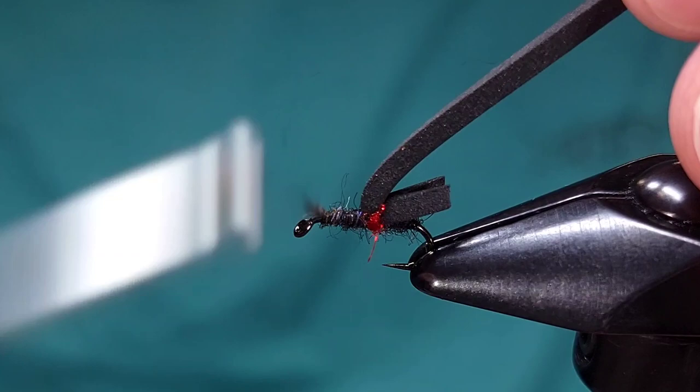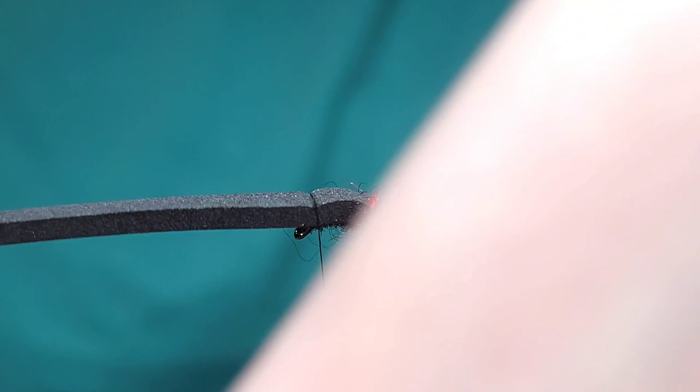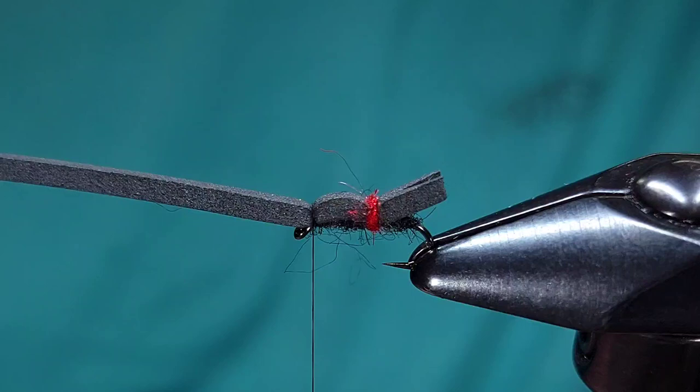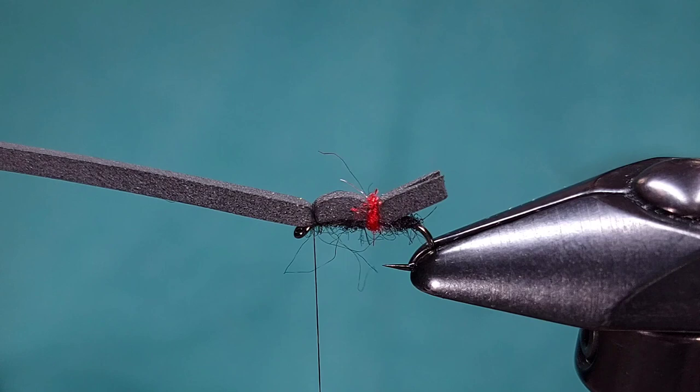I'm going to bring my foam again all the way to the eye and then take a wrap backwards. Once I've done this I'll secure this foam at the front with two or three wraps. Make sure it's not going anywhere. And the next step here is going to be to add the wing material.